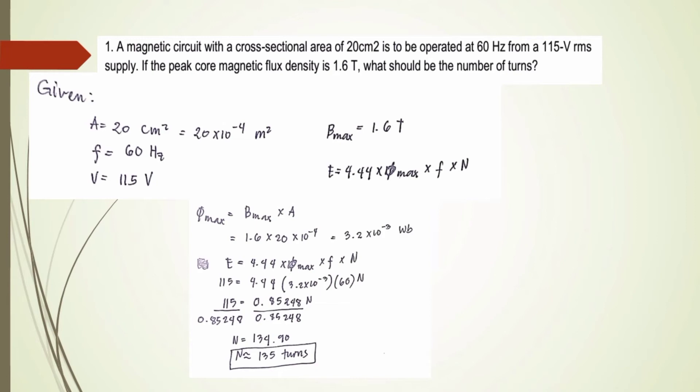And the given formula here for the induced voltage, we have E equals 4.44 times the maximum flux times the frequency times the number of turns. Before that,